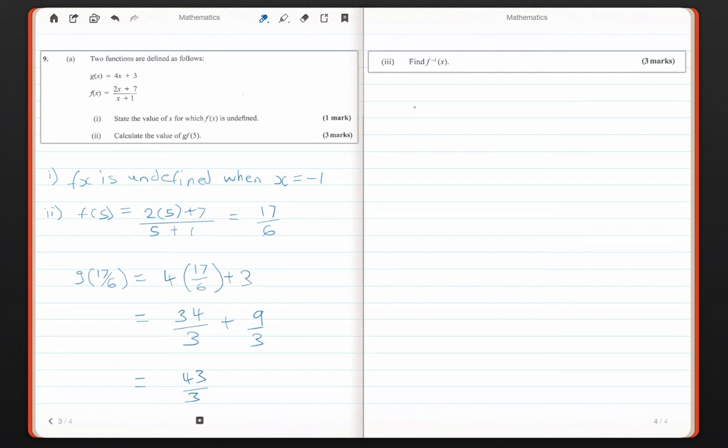Moving on to the last question, we're asked to find the inverse function of f of x. This is usually a challenging question, but I've broken it down into three basic steps. The first step, you rewrite your function in terms of y. So in the original problem, you have f of x equals such and such. But when we're starting to find the inverse, we will write in terms of y. So I'm going to say y is equal to 2x plus 7 over x plus 1.